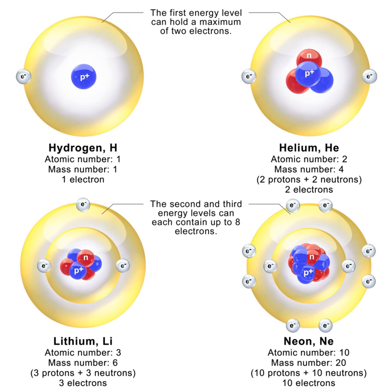The Bohr model gives almost exact results only for a system where two charged points orbit each other at speeds much less than that of light. This not only involves one-electron systems such as the hydrogen atom, singly ionized helium, and doubly ionized lithium, but it includes positronium and Rydberg states of any atom where one electron is far away from everything else. It can be used for K-line X-ray transition calculations if other assumptions are added, and in high energy physics it can be used to calculate the masses of heavy quark mesons.